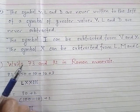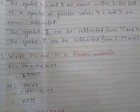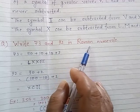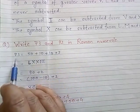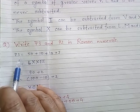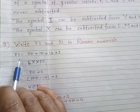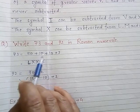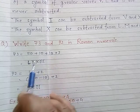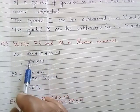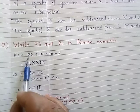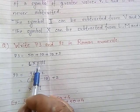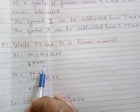Now let us apply these rules to different numbers. Write 73 in Roman numerals. We break down 73 as 50 plus 10 plus 10 plus 3. L is used for 50, X for 10, X for 10, and III for 3. So 73 is written as LXXIII.